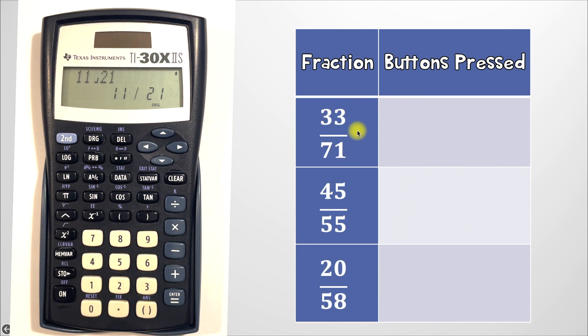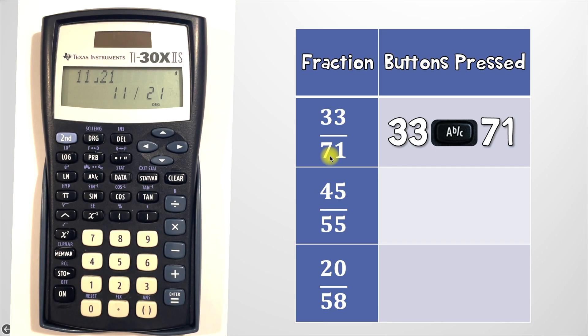So what buttons did you press for this first example? Well the numerator is 33 so you should have entered 33. Then because it's a fraction you should have pressed the ABC button and then finally you would enter the denominator which is 71. So let's do that all together now. Let's clear a calculator first.